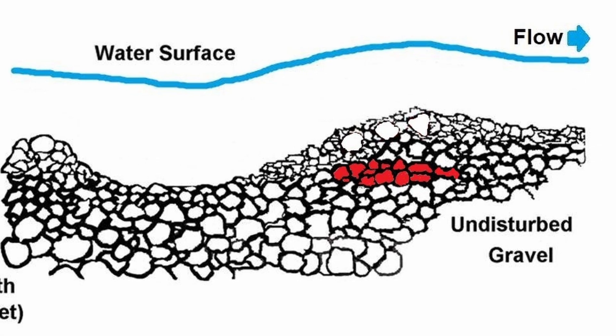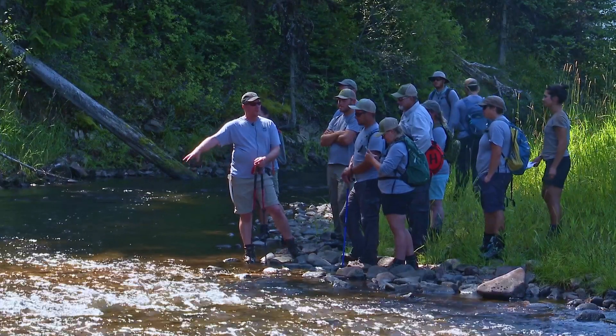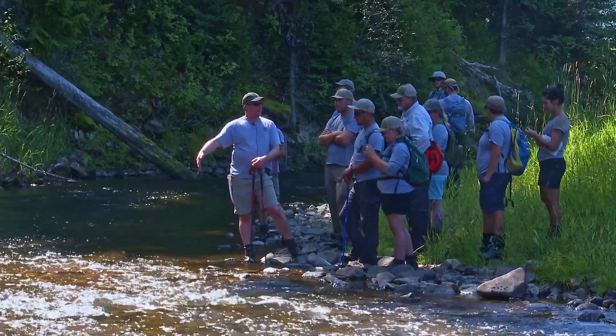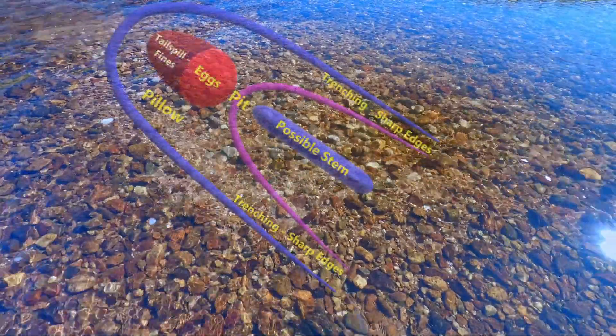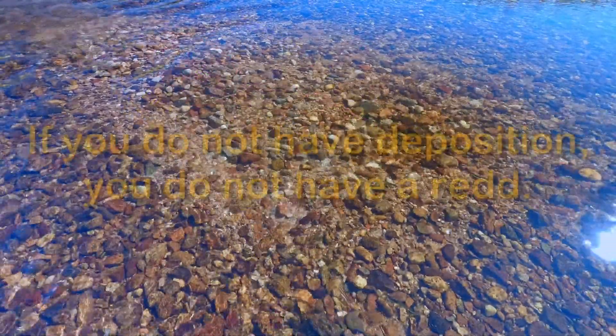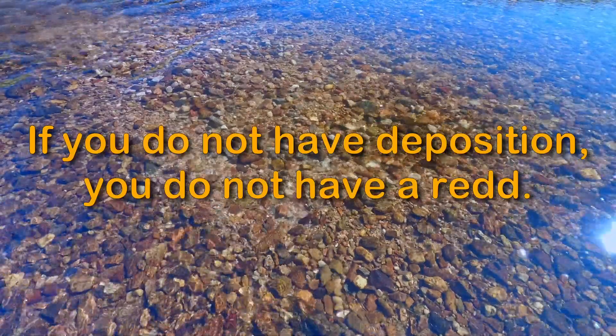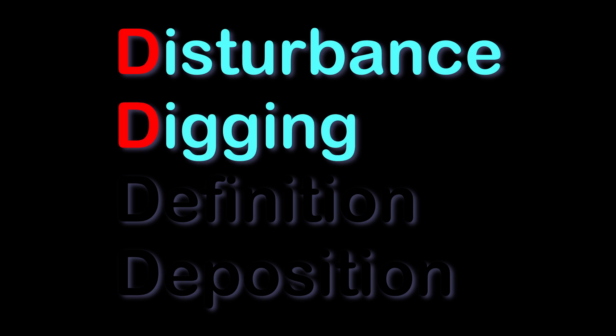The ultimate question is: were eggs deposited in the red? Surveyors cannot see eggs within the red to confirm they are present. Consequently, the systematic 4D method helps to infer their presence. If you do not have deposition, you do not have a red. Having confirmed disturbance, digging, definition, and deposition, record the site as a red.